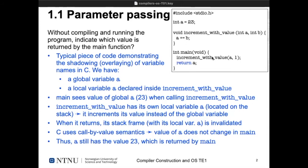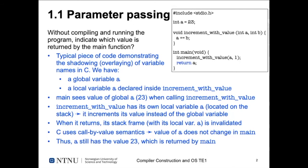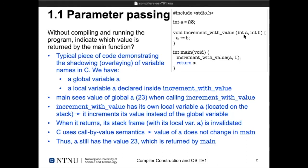When main calls `increment_with_value` and passes `a`, it passes the value by value — it just copies the value over. It doesn't pass a pointer or reference. So it reads the value of `a` which is 23 and copies it into the function's local variable `a`, which is a different variable. `increment_with_value` increments this local copy from 23 by parameter `b` which is 1, giving a result of 24, and writes it back to its local variable `a`.